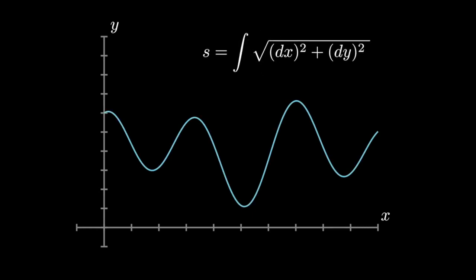But this is the same as integrating the length of each infinitely small segment. Each of these segments would go horizontally a distance dx and vertically a distance dy, making that length equal to the square root of dx squared plus dy squared. The total length would just be the integral of this between the two bounds. This equation is it.